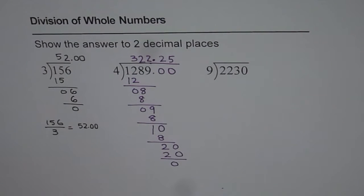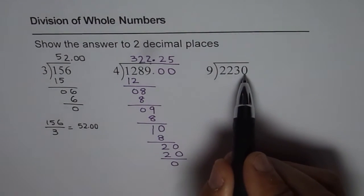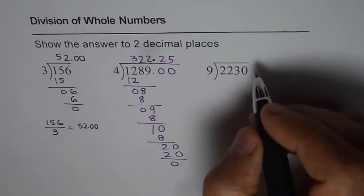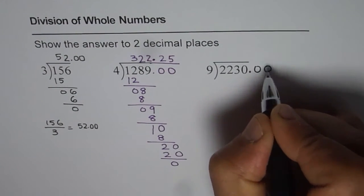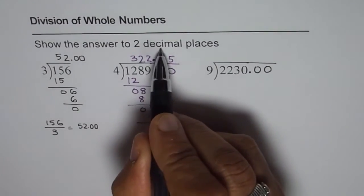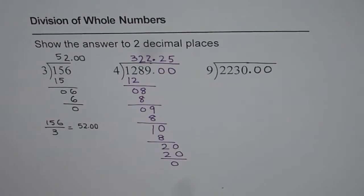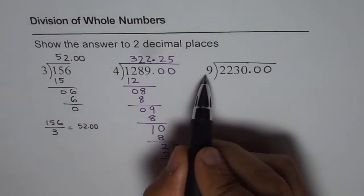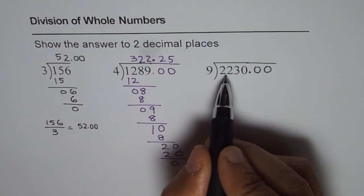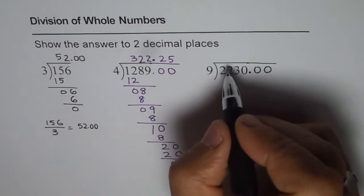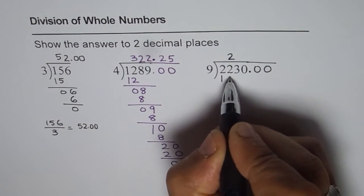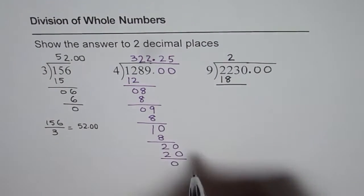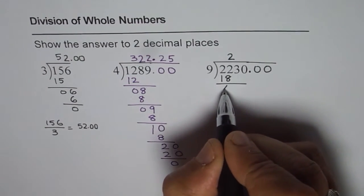Now let's do the next one. In this particular case we have 2230 divided by 9. As we said let us put two zeros right away since we have to find answer to two decimal places. Now let's divide 22 by 9. 9 times 2 is 18, 3 is 27 which is bigger than 22. So 2 is ok. 9 times 2 is 18. When you take away 18 from 22 you get 4. Bring down 3.